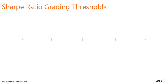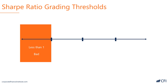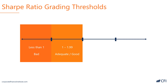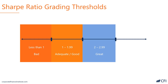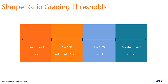Now let's look at a grading threshold for the Sharpe Ratio. Here is a scale. Anything less than 1 is considered bad, and yes, the Sharpe Ratio can go negative if the excess return turns out to be negative. 1 to 1.99 is considered good. From 2 to 3 is considered great, and anything above 3 is excellent. These are just general rules of thumb, and different investors may have their own interpretations, but this is a rough guideline to follow.